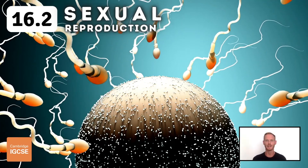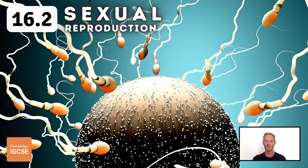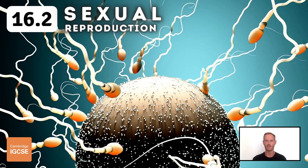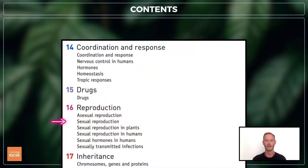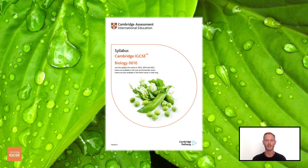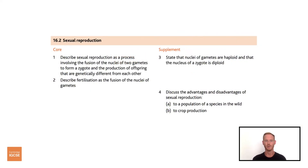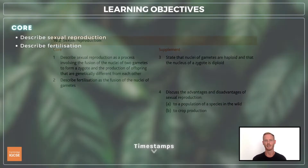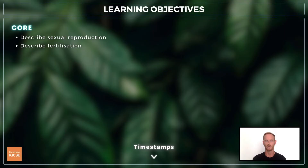Hello and welcome to another complete Cambridge IGCSE biology lesson, where you'll learn absolutely everything you need to know on topic 16.2, sexual reproduction. As always, we'll be following the Cambridge syllabus exactly, and we'll cover absolutely everything you need to know for your final exam. For topic 16.2,